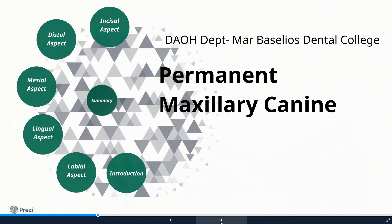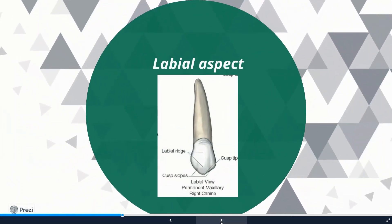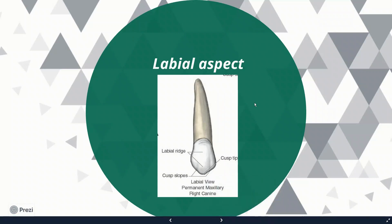Now we'll look at the various aspects — how does the permanent maxillary canine look in each view? First, we look at the labial aspect. This is the right maxillary canine. It has a cusp with two cuspal slopes: the mesial cuspal slope and the distal cuspal slope. It has a very strong, prominent labial ridge. The mesial cuspal slope is shorter than the distal cuspal slope.